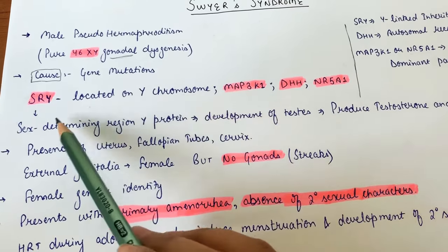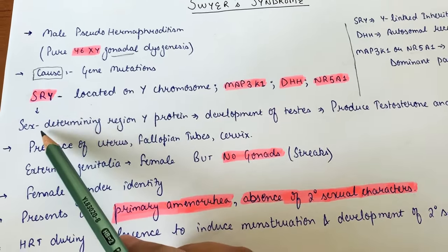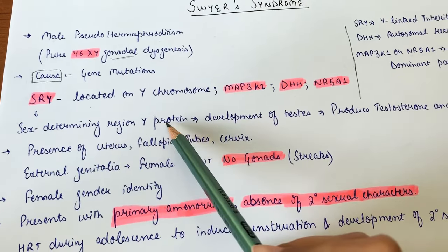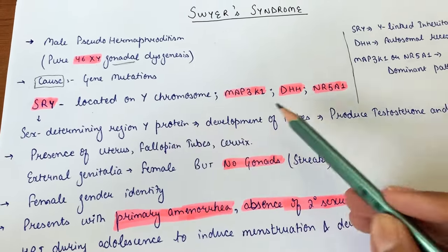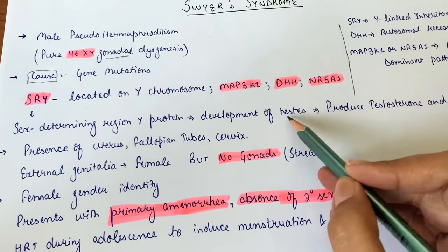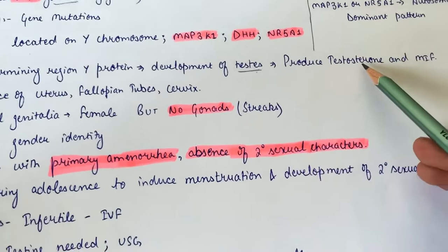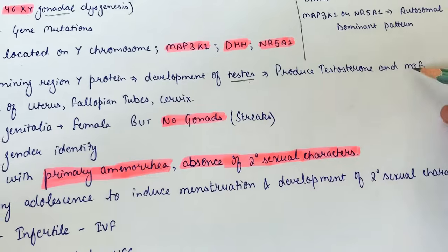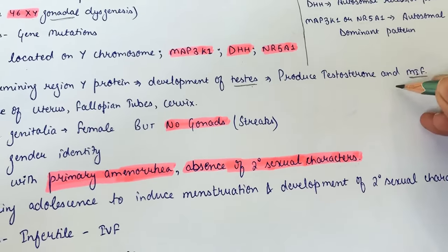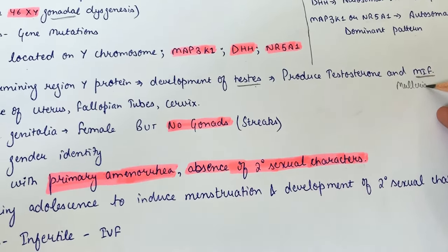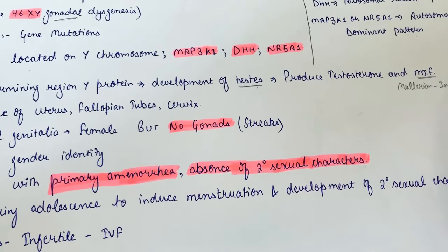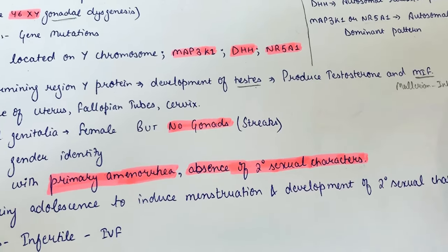The SRY gene is located on the Y chromosome and produces a protein called sex-determining region Y protein. In a normally growing fetus, this protein induces testis development, which then produces testosterone and MIF (Müllerian inhibiting factor). In the presence of MIF and testosterone, female reproductive organs do not form.